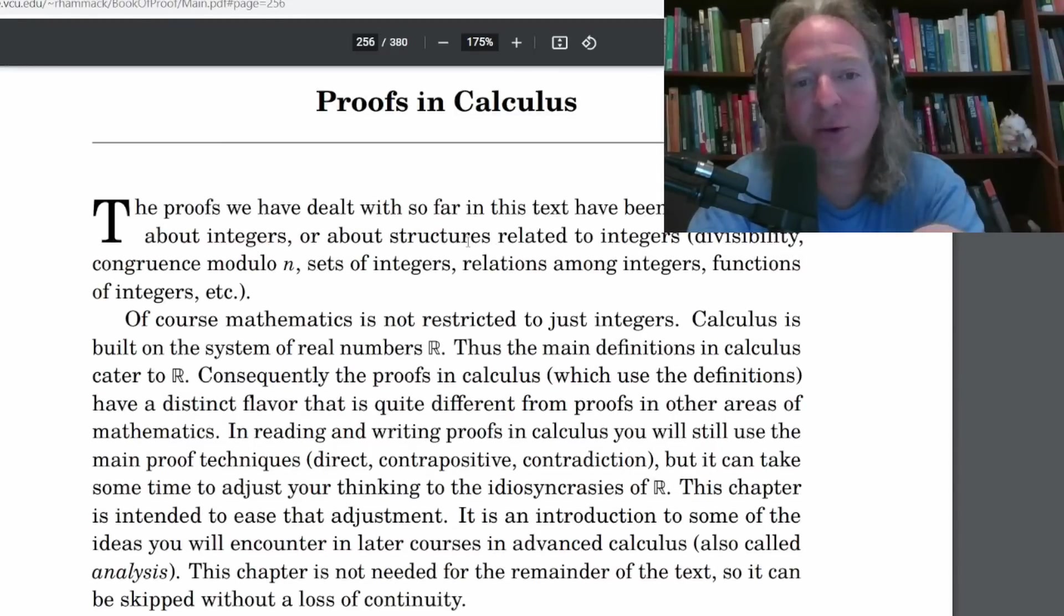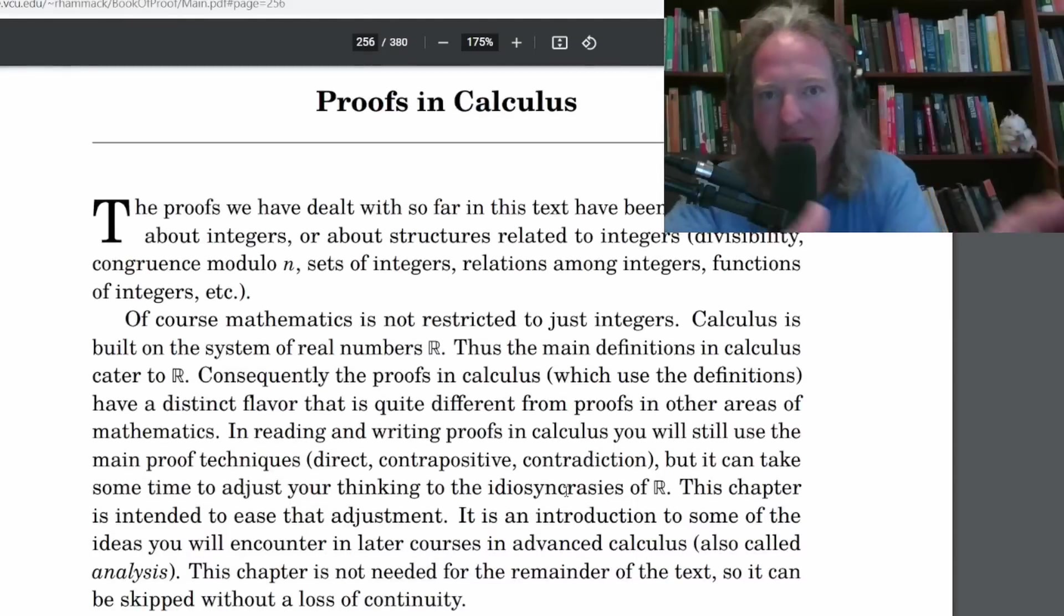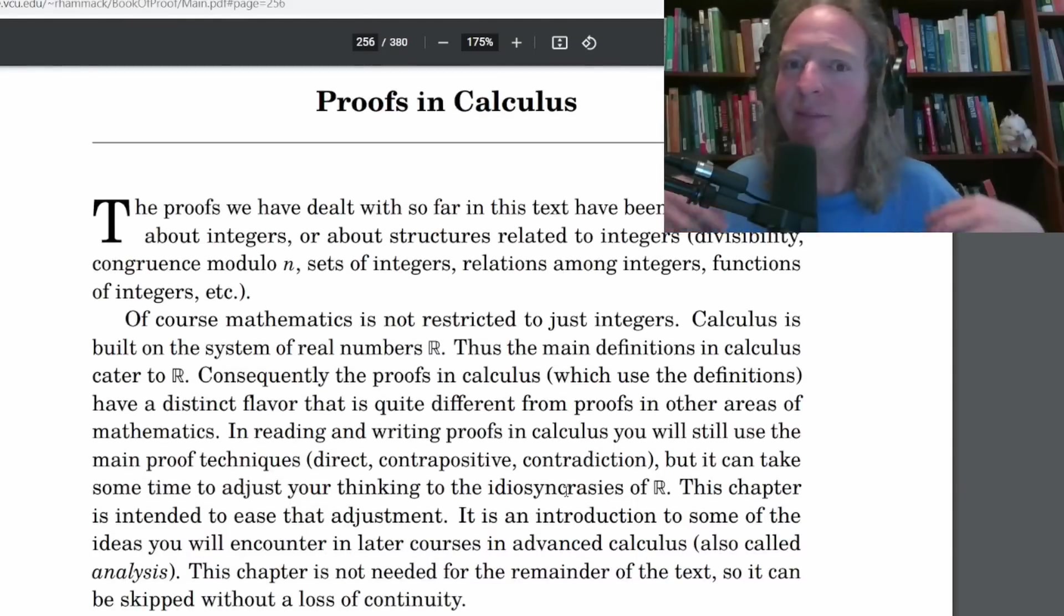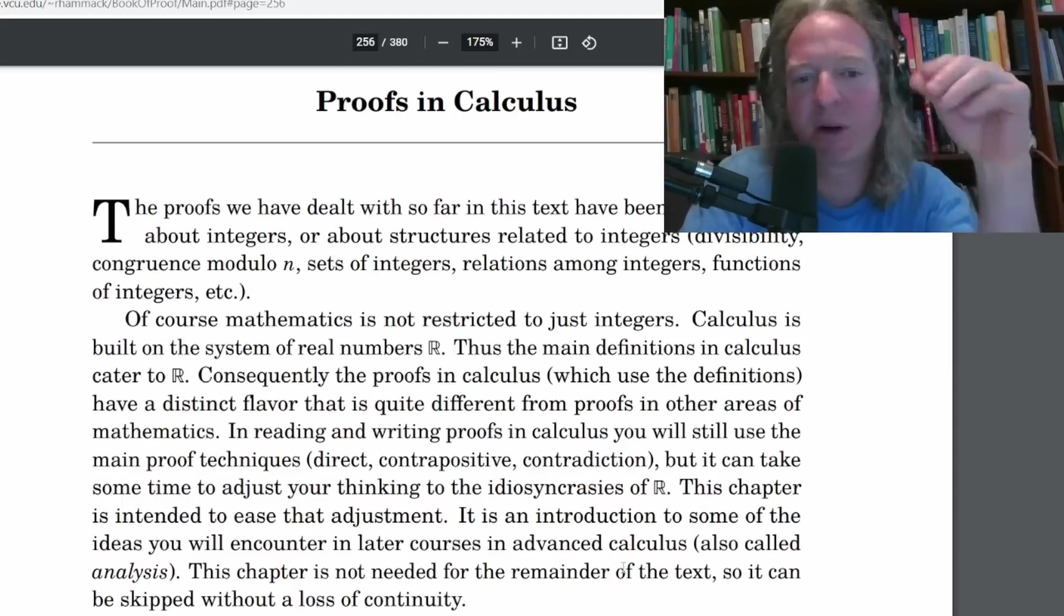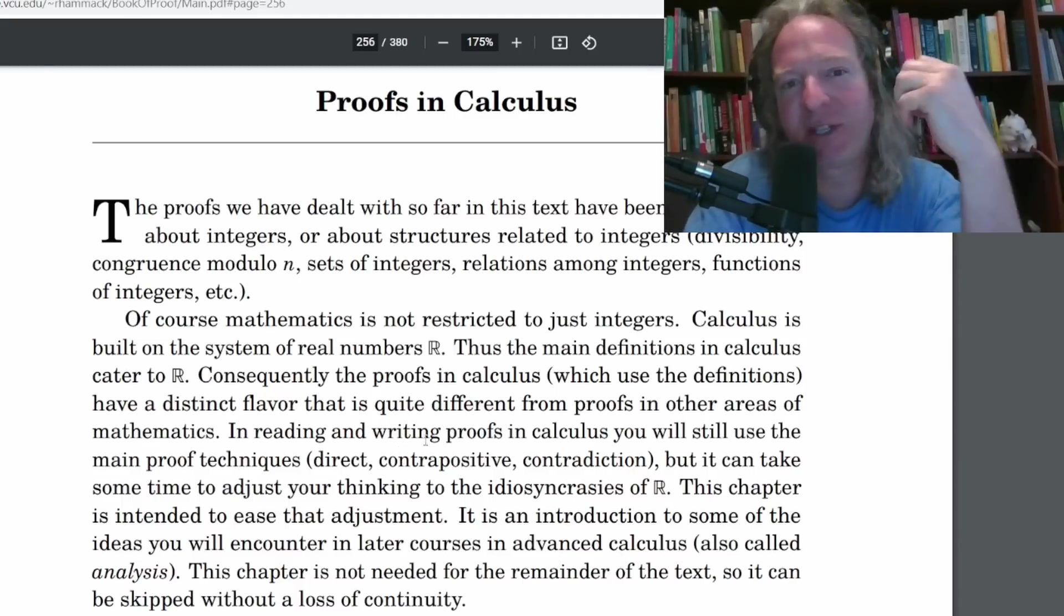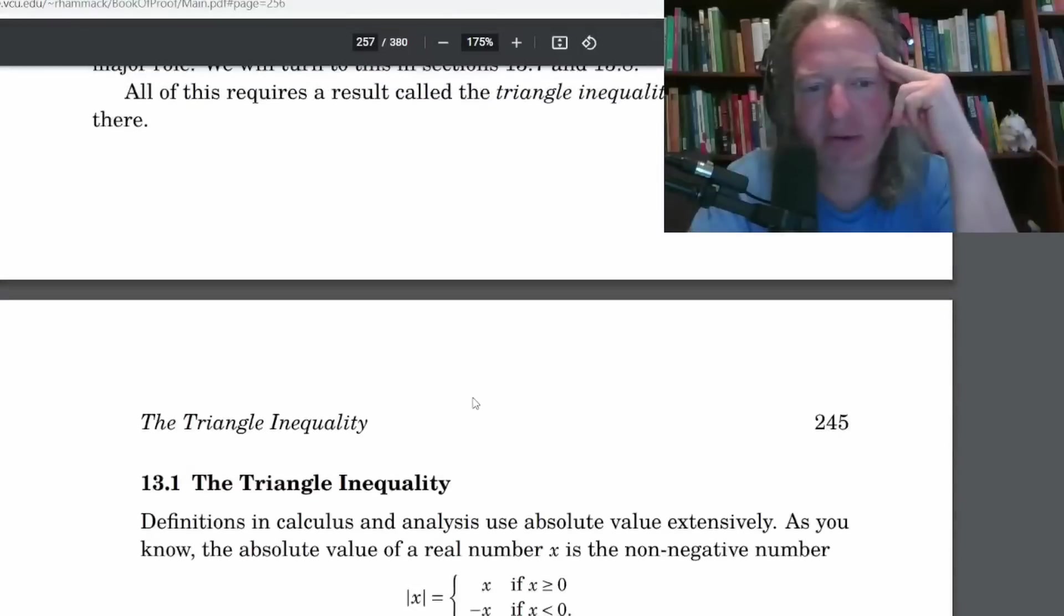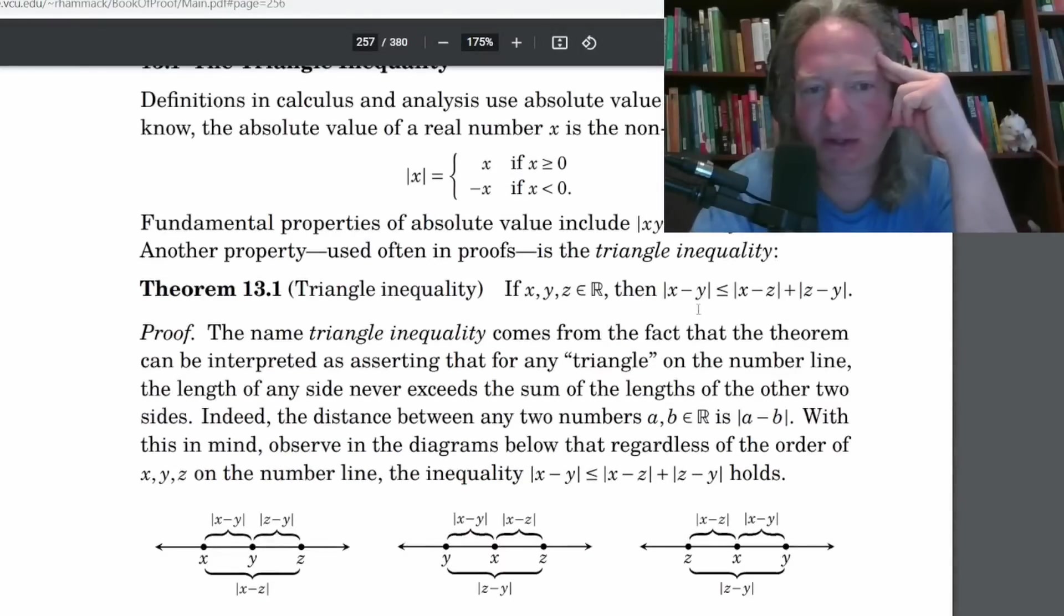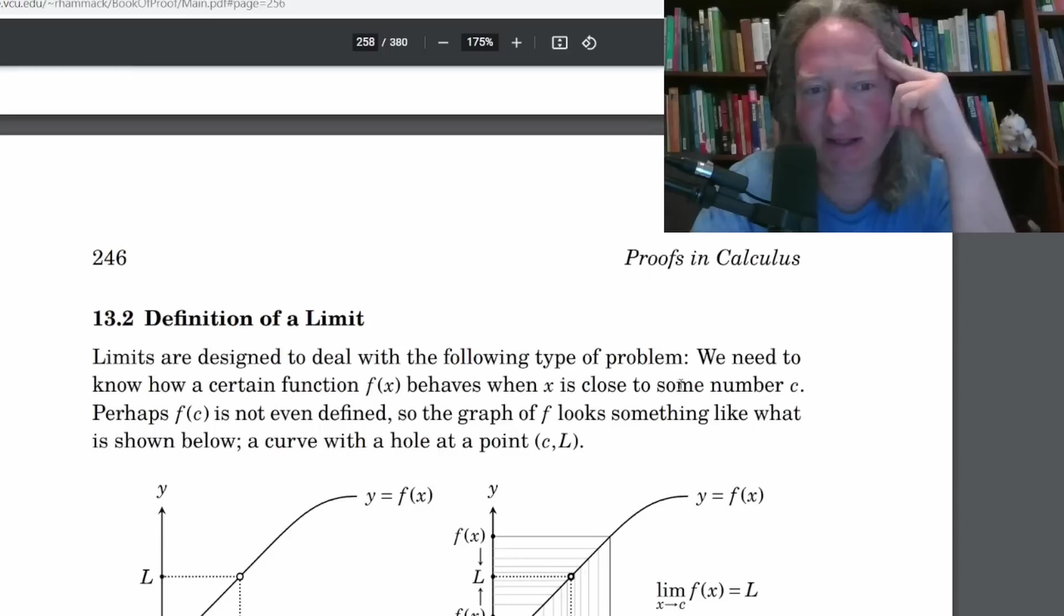Of course, mathematics is not restricted to just integers. Calculus is built on the system of real numbers and calculus proofs are different. You spend a lot of time doing proofs in all of these things he's talking about. And then when you jump to like the calculus proofs with the deltas and the epsilons and inequalities, it's a whole other proof style. Just like when you jump to counting proofs, it's a whole other way of writing proofs. It takes a whole different type of thinking, a whole different skill set. You're still using a lot of the same skills. That structure is still there, but the proofs have a different flavor to them.